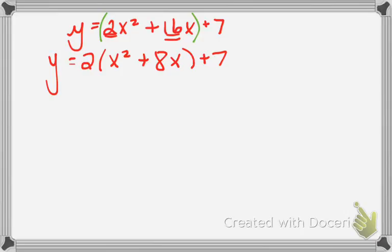Now off to the side, you're going to do a little calculation. You're basically going to take the number in front of your new x term, and you are going to divide it by 2 and square it. So we'll get 4 squared, which is 16.